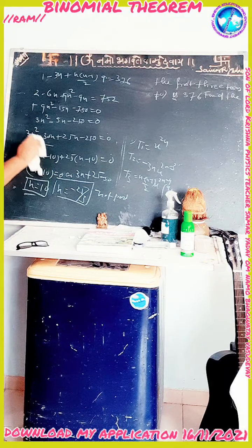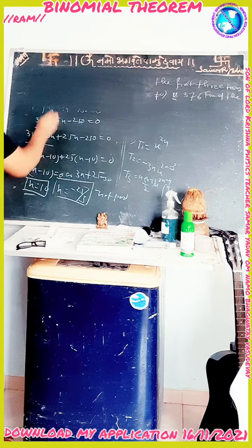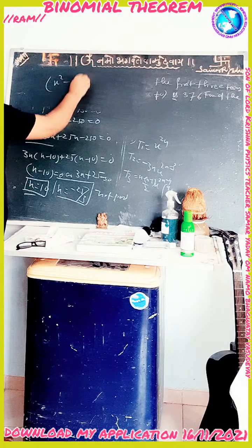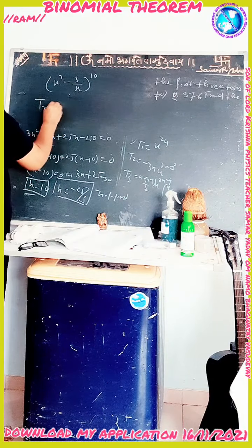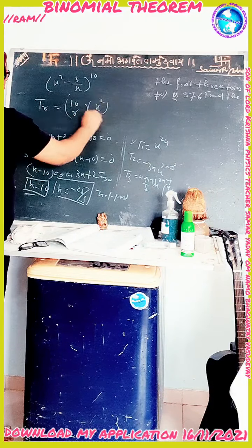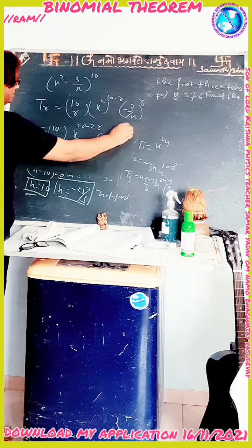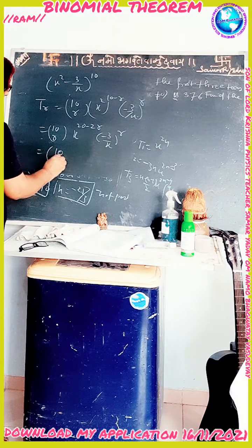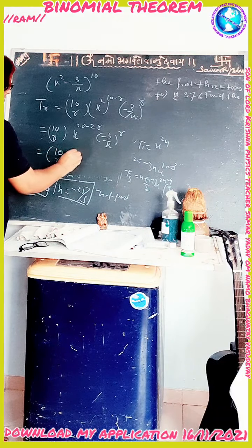Putting n = 10, the expression is (x² − 3/x)^10. The general term T_{r+1} = 10Cr · (x²)^(10−r) · (−3/x)^r, which simplifies to 10Cr · x^(20−2r) · (−3)^r · x^(−r) = 10Cr · (−3)^r · x^(20−3r).